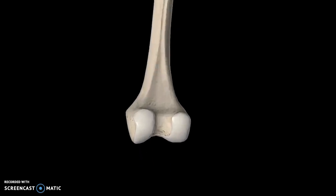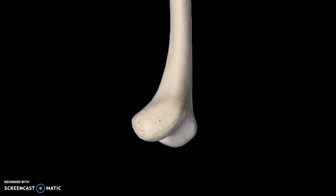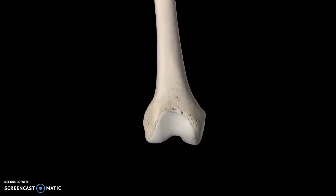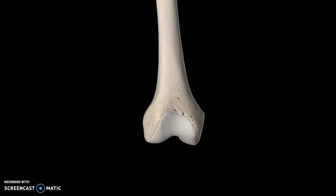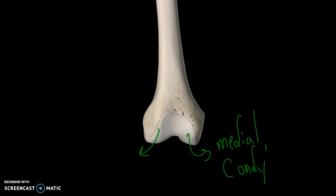Now we can move down to the condyles. Moving back to the anterior view, there are two condyles to pay attention to. This one is towards the middle of the body, so it is the medial condyle. This one is pointing outside, so it is the lateral condyle.